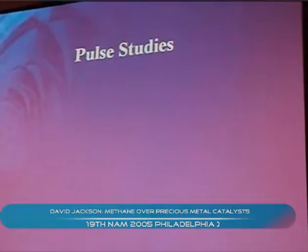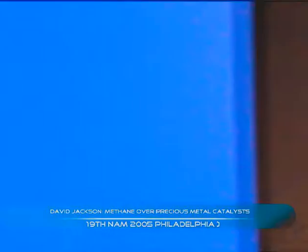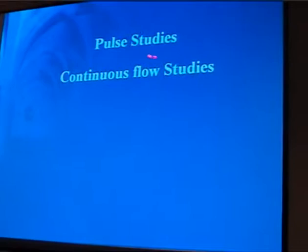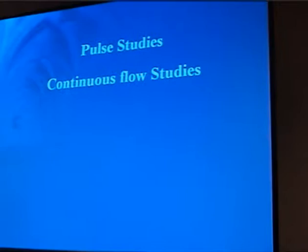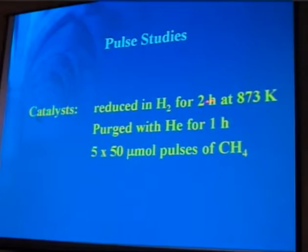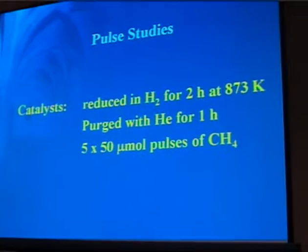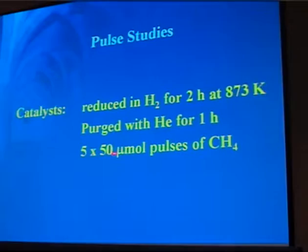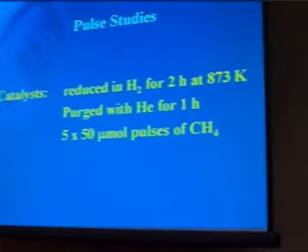We're going to look at two different sets of studies: pulse studies and continuous flow. The pulse studies are done at one atmosphere and the continuous flow studies at 20 bar, so we're looking at pressure effects. The pulse studies examine the first few seconds of catalyst life and the continuous flow studies look at the catalyst over the course of at least an hour. We reduce the catalyst to 873 K, which is the reaction temperature for all results shown today, purging with helium and then putting pulses of methane into a helium carrier.